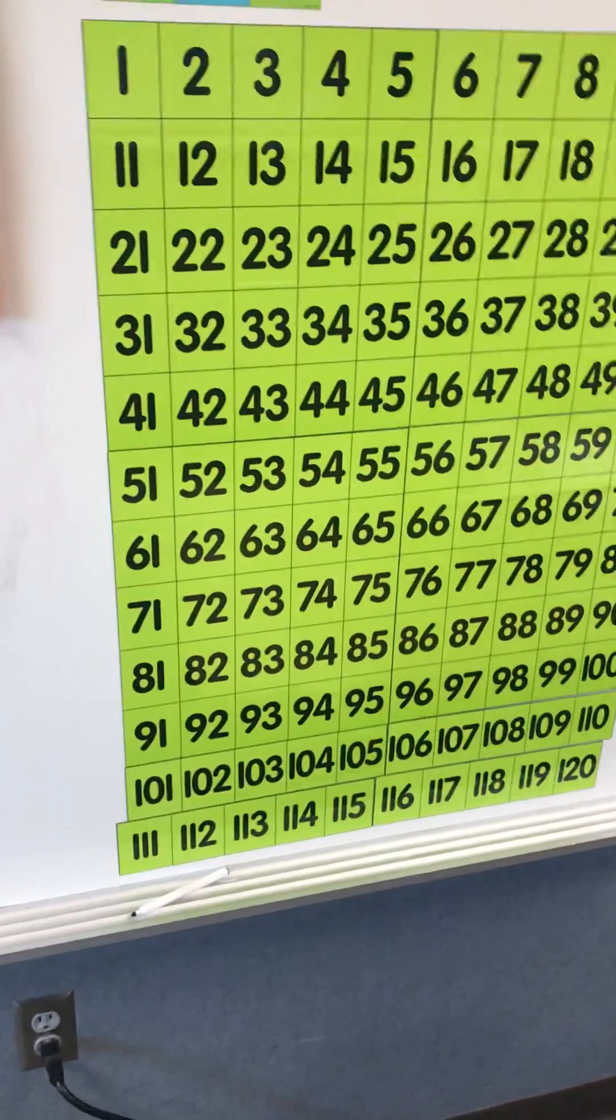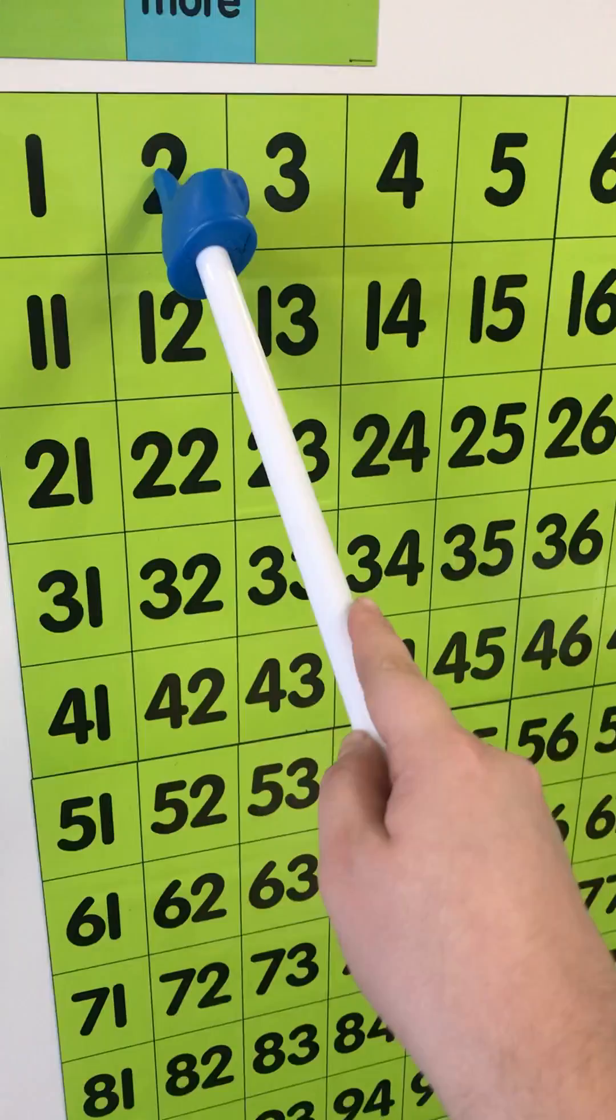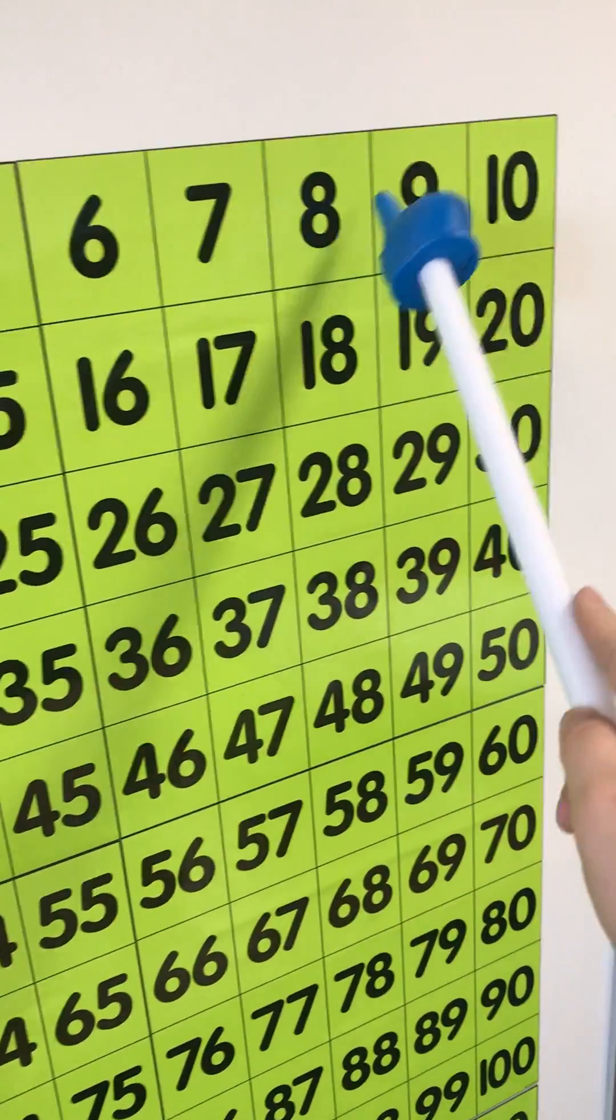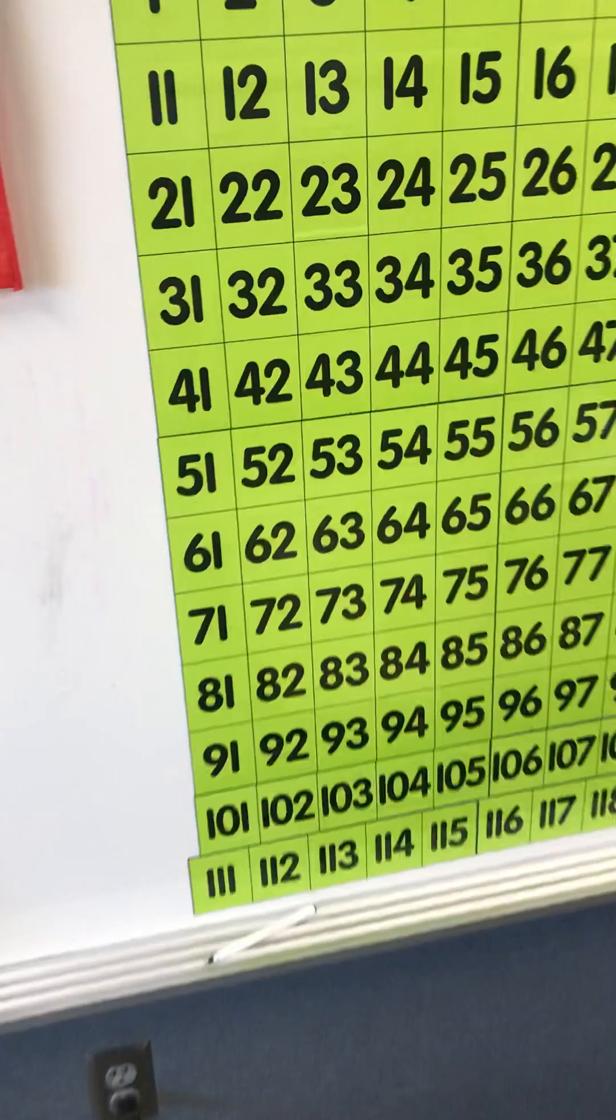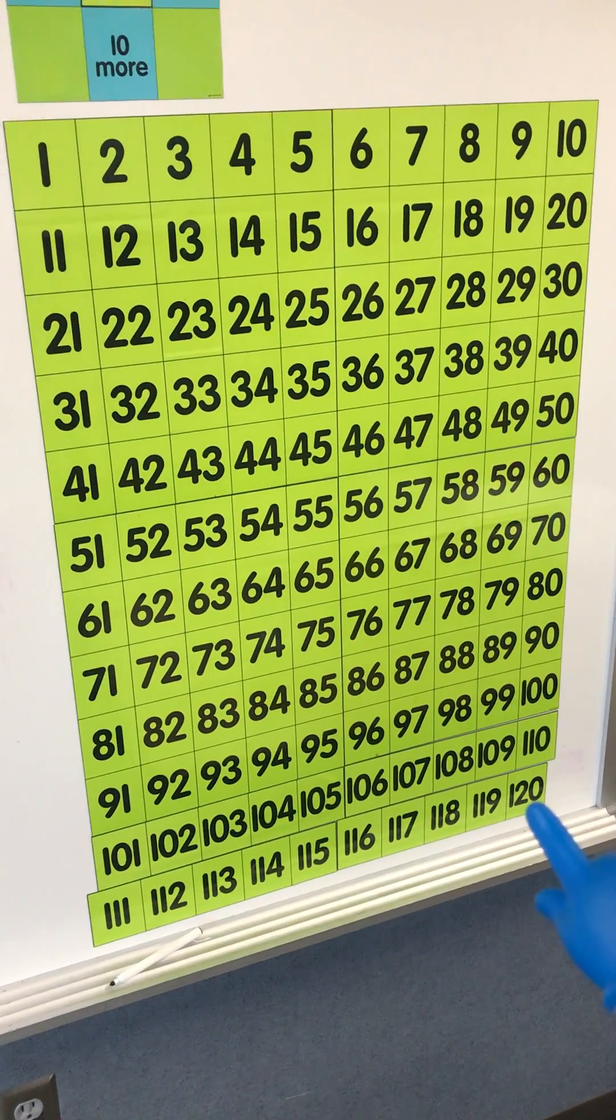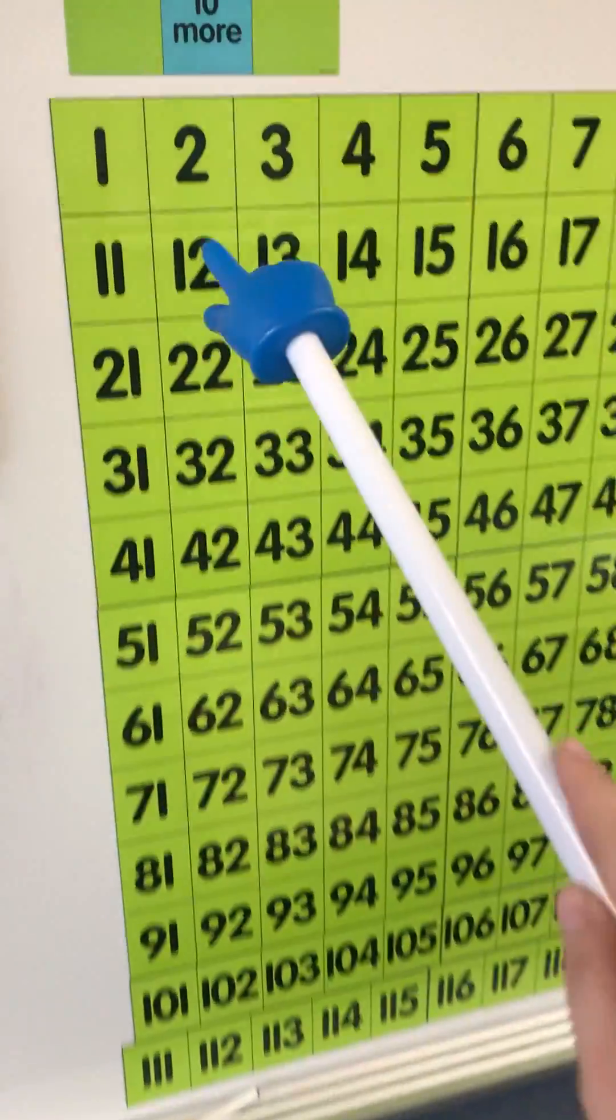Alright, so in this video we're gonna practice counting to 120 by twos. To do this we're gonna skip every other number and that's called counting by twos. We're gonna start with the number two and go all the way to 120. So for this you'll need a 120 chart and something to point with.